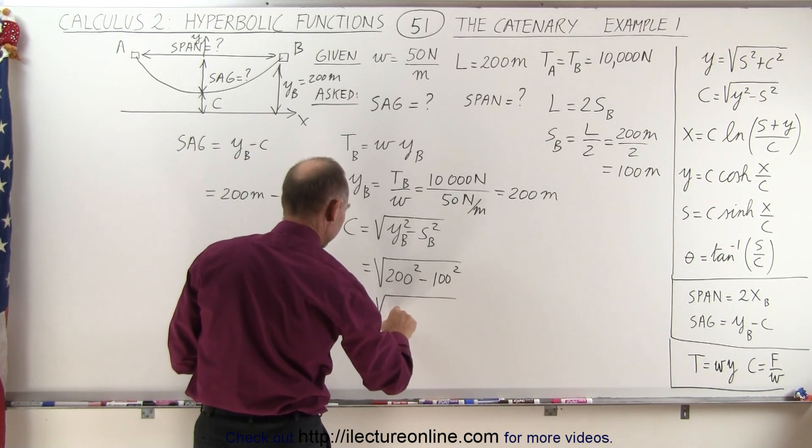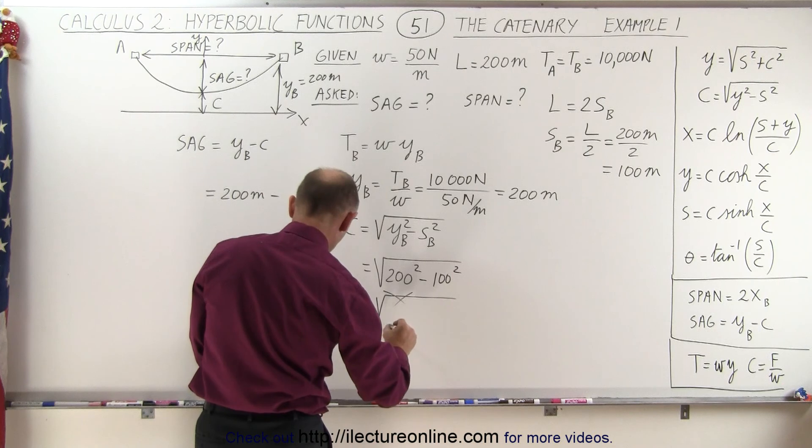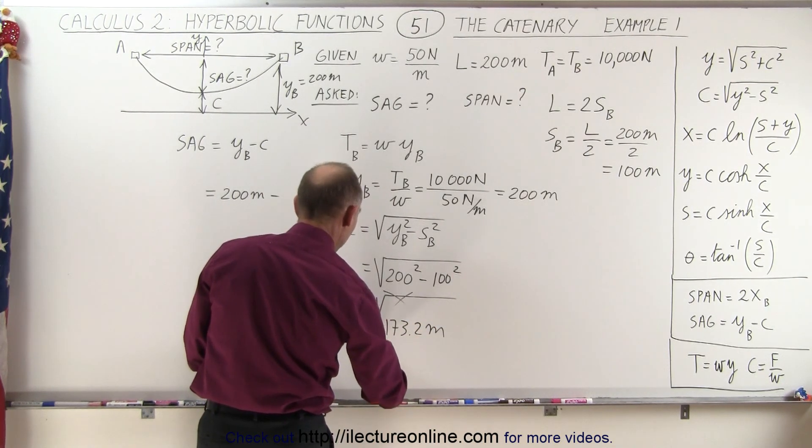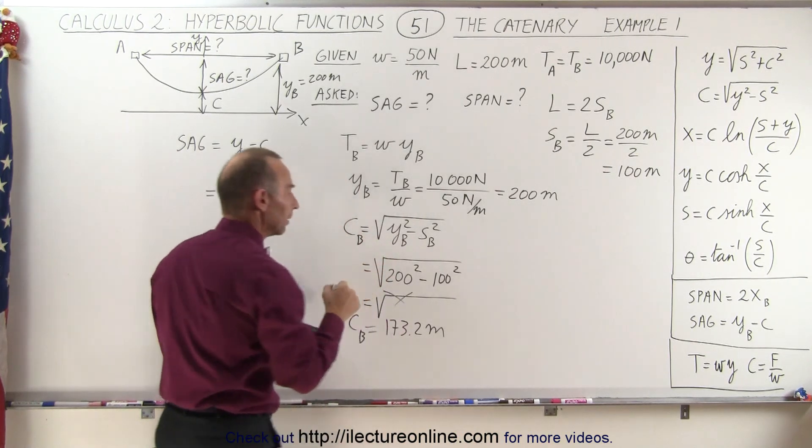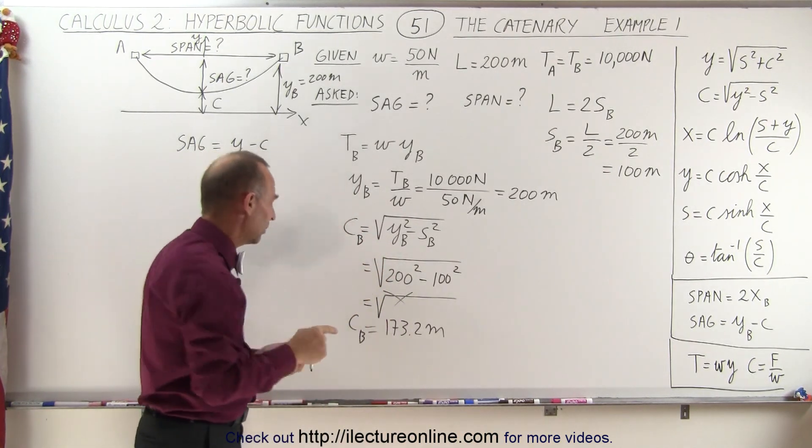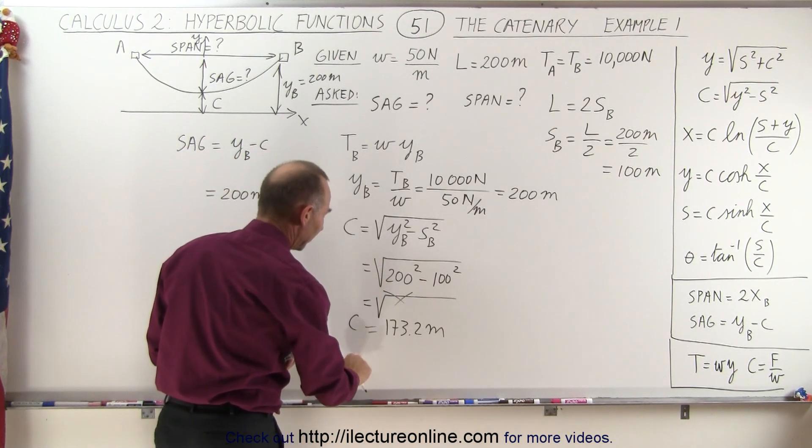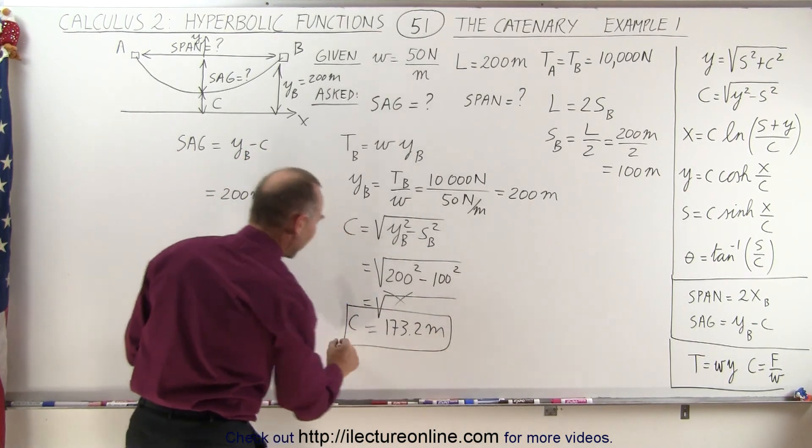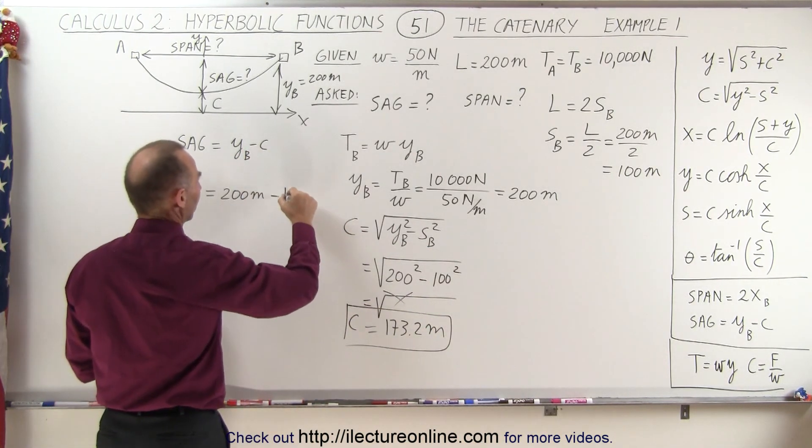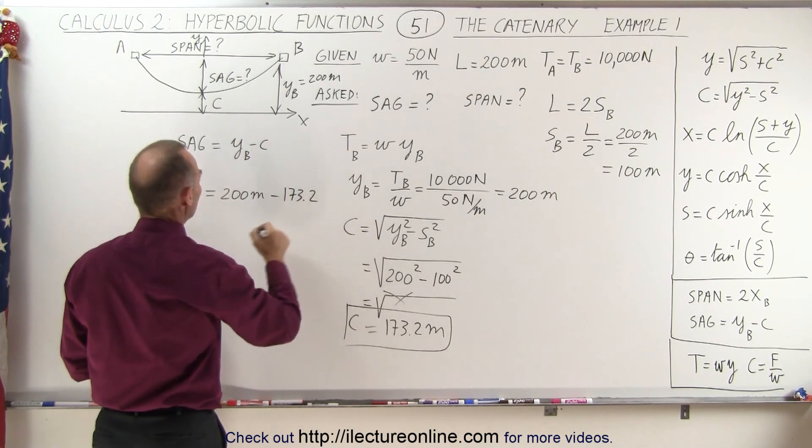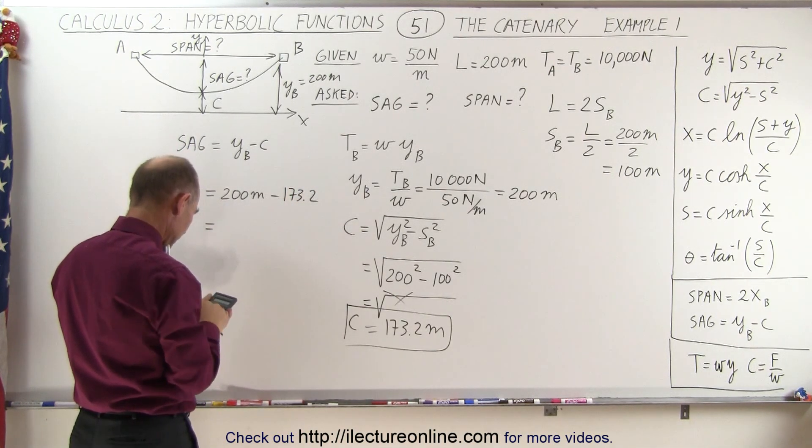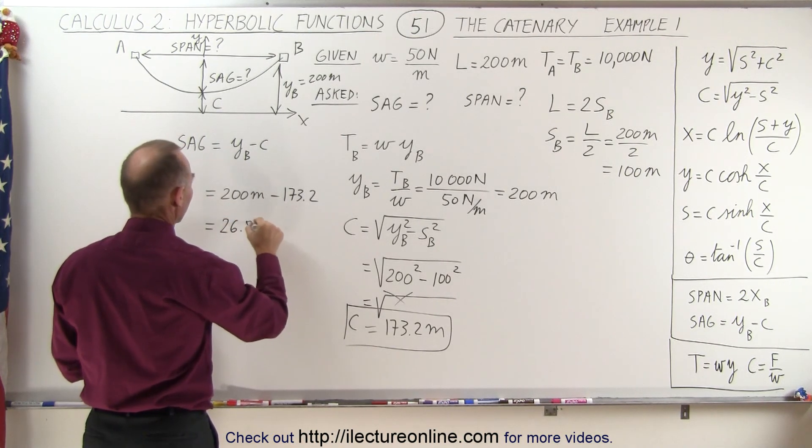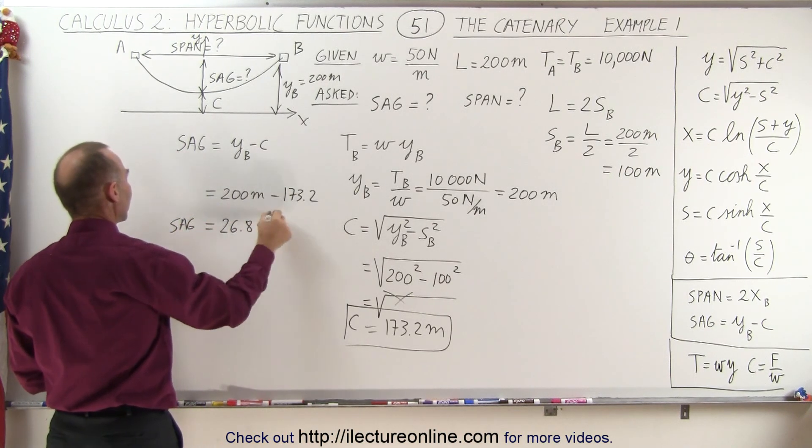So we don't need that part, we'll simply just use a calculator. So it's 173.2 meters for C. We shouldn't really write C at B, that's not necessary. C will be the same number no matter what, but we do have to put in values from the same point. We can plug that in here, so we have 173.2, and so the sag would then be 26.8 meters. And so that's how we find the sag in this case.